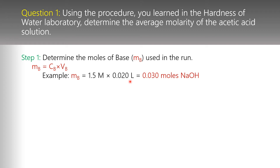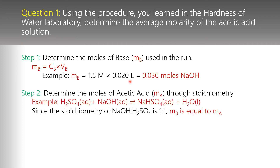Now I know how many moles of the base I used. The second step is to determine how many moles of acetic acid I used through stoichiometry. I'm using a hypothetical system — taking sulfuric acid and neutralizing it with sodium hydroxide to get sodium bisulfate and water. The stoichiometry between NaOH and H₂SO₄ is one-to-one, so my moles of base equals my moles of acid. If I used 0.03 moles of NaOH, I also used 0.03 moles of acid.